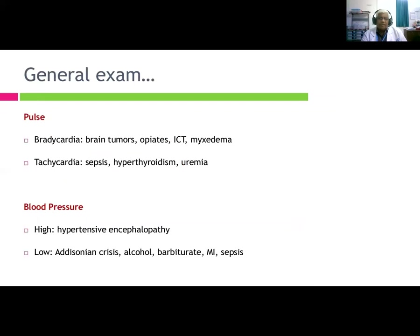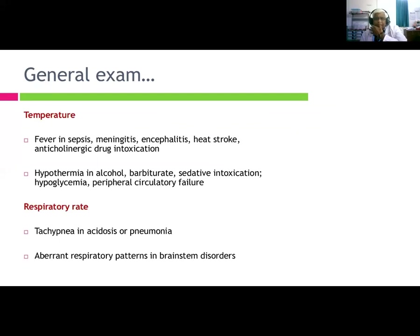Examination of the comatose patient — pulse: bradycardia indicates brain tumors, opiates, raised ICP, or myxedema. Tachycardia indicates sepsis, hyperthyroidism, or uremia. Blood pressure: high BP suggests hypertensive stroke, uremia; low BP suggests Addison's disease, Addisonian crisis, alcohol or barbiturate intoxication, or sepsis. Temperature: fever indicates sepsis, meningitis, encephalitis, or heat stroke; anticholinergic drug intoxication; hypothermia indicates alcohol, barbiturate, or sedative intoxication, hyperglycemia, or peripheral circulatory failure. Respiratory tachypnea occurs in acidosis and pneumonia.